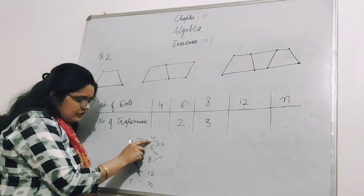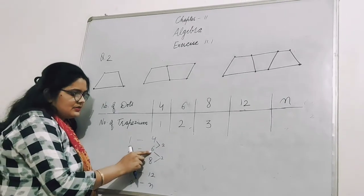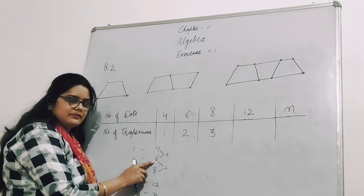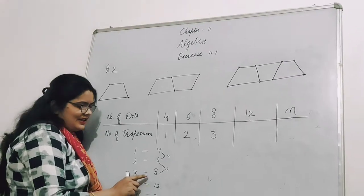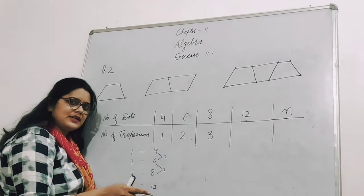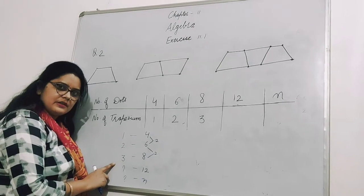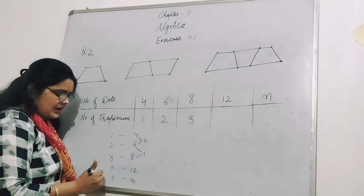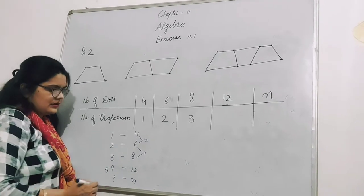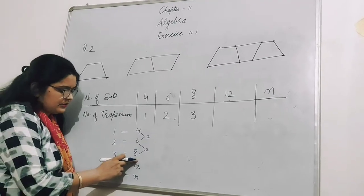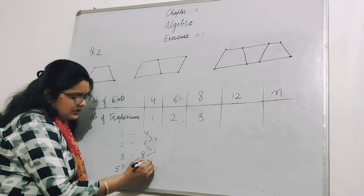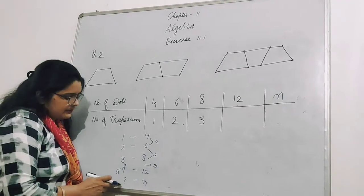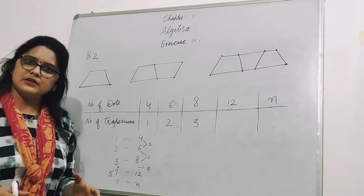If you generalize: 4 dots makes 1 trapezium, 6 dots makes 2 trapeziums - even number of dots. 8 dots makes 3 trapeziums. After 8, the next even number is 10, which makes 4 trapeziums. After 10, even number 12 makes 5 trapeziums. Because 10 dots would make how many trapeziums? 4. Now we have to find a relation for N.